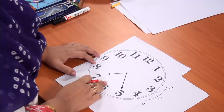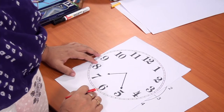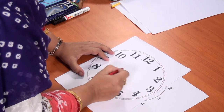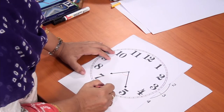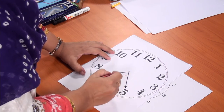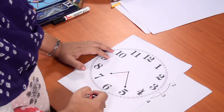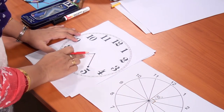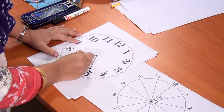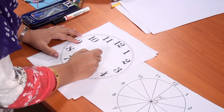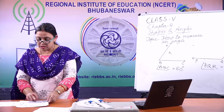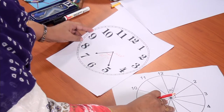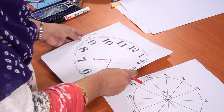Look at this clock showing 7:25. What should be the angle? How many divisions is it covering? 1 and 2 — that is 2 divisions. Each division represents 30 degrees. So this whole angle will be 30 plus 30, which is 60 degrees. Without measuring the angle directly, you can tell the actual measure of the angle between the two hands of a clock.